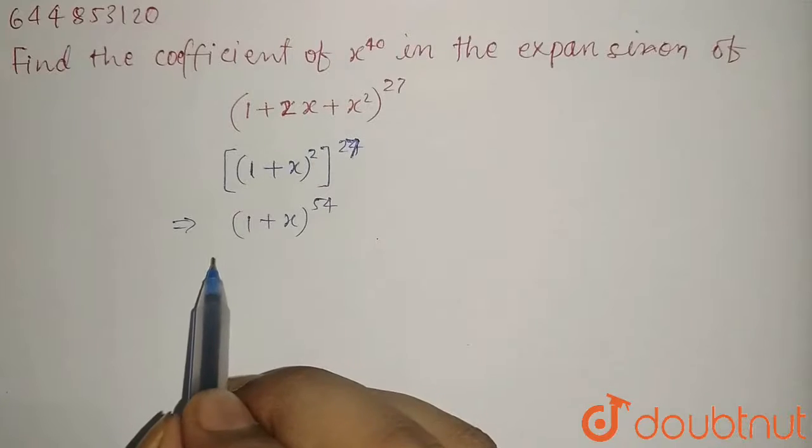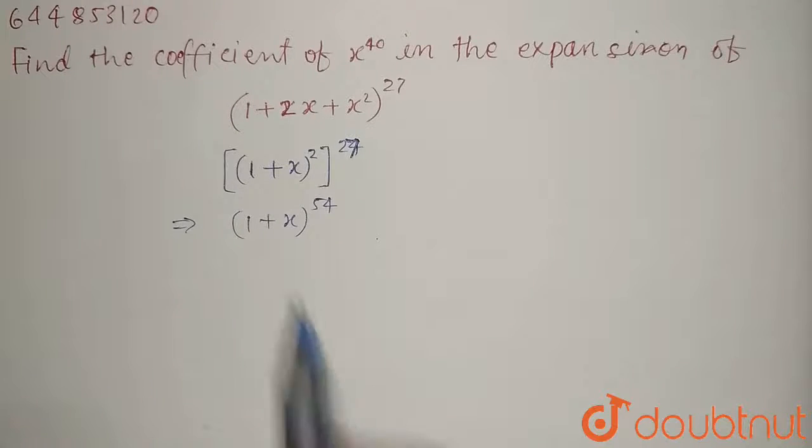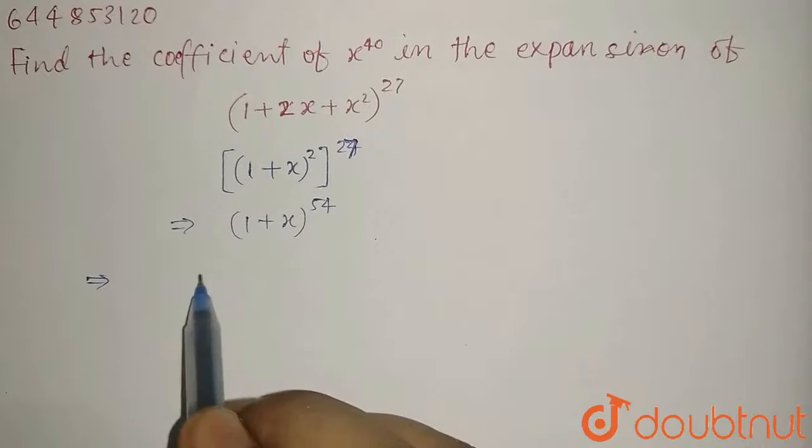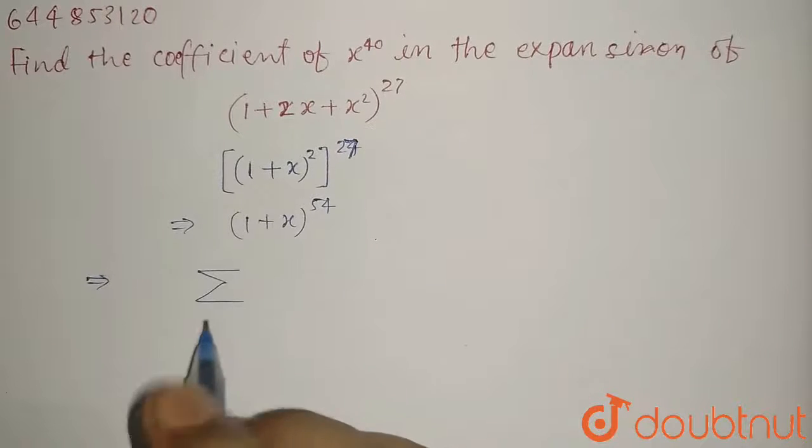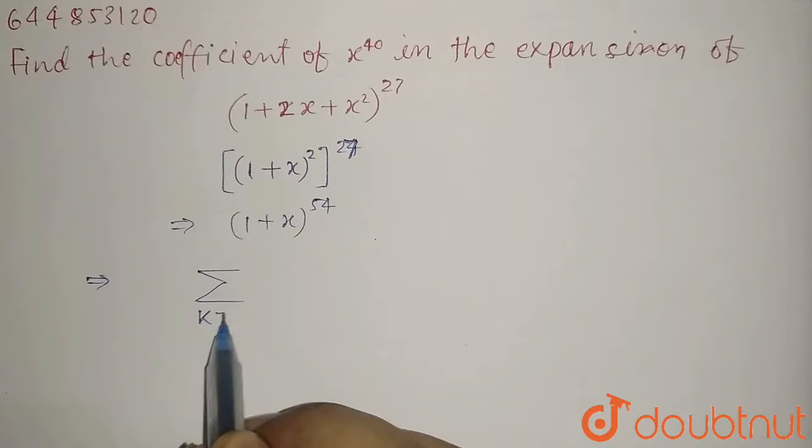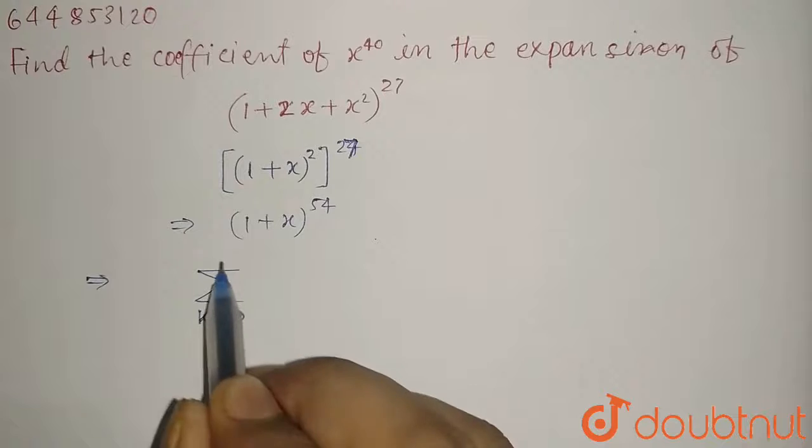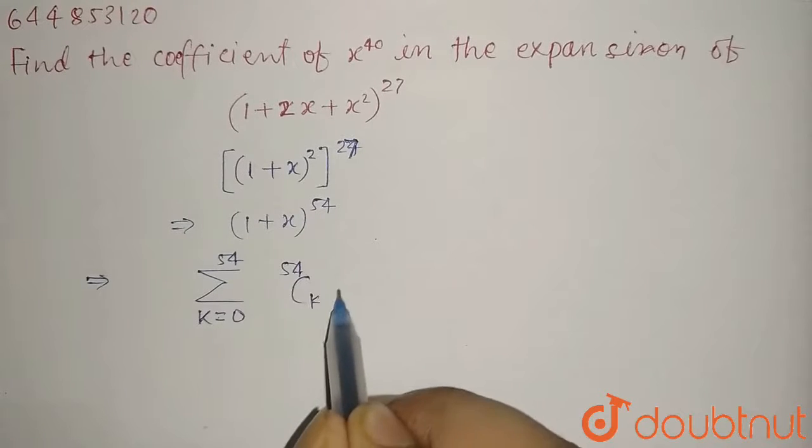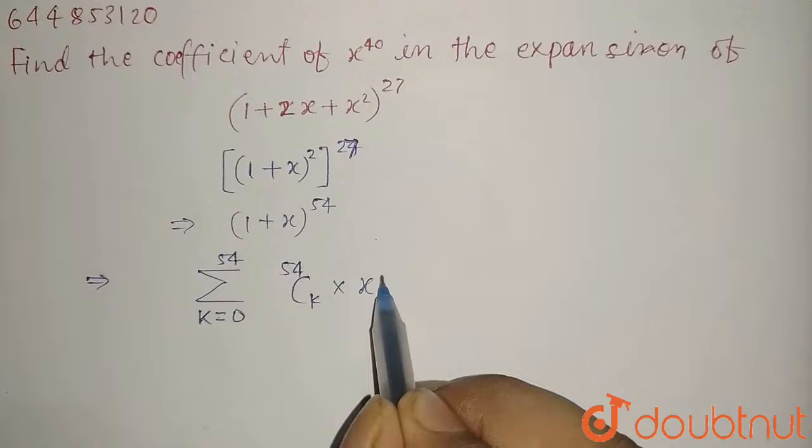Now according to the binomial theorem, expansion of this expression equals the summation k equals 0 to 54, 54 C k into x to the power k.